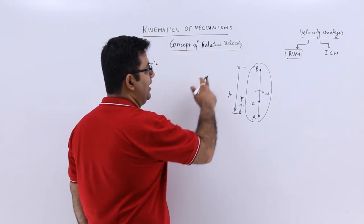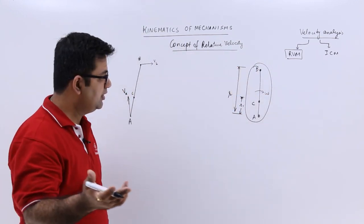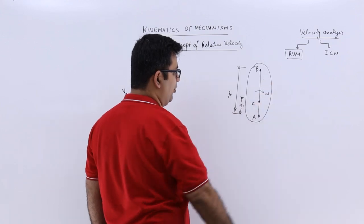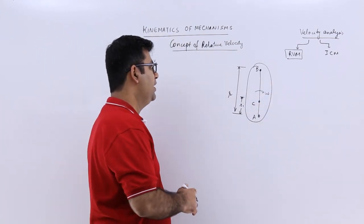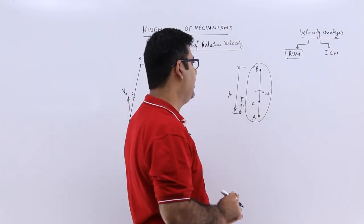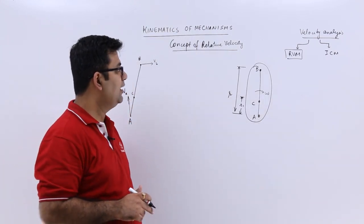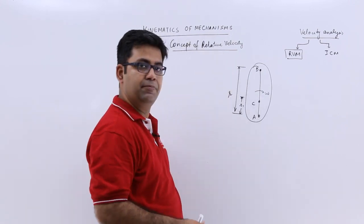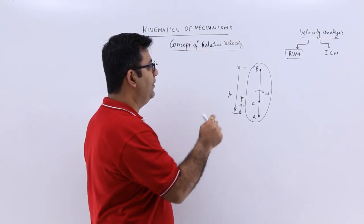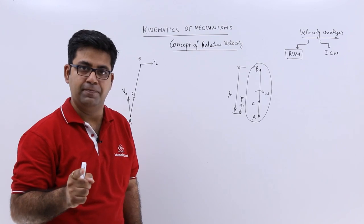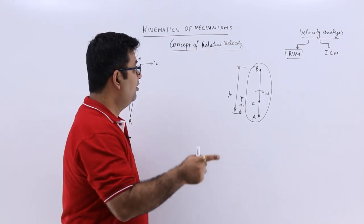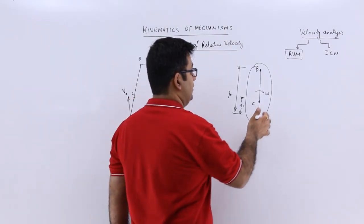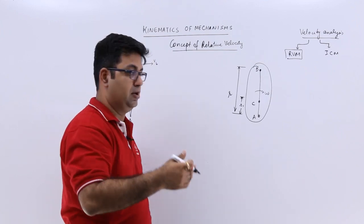Let's say you have a link with two points A and B, and on this same link you have another point C which is in line with A and B. This link is rotating in a clockwise direction with angular velocity omega. The distance between A and B is R, and between A and C is R1. The velocity of any point on a link with respect to another point on the same link will be perpendicular to that link.